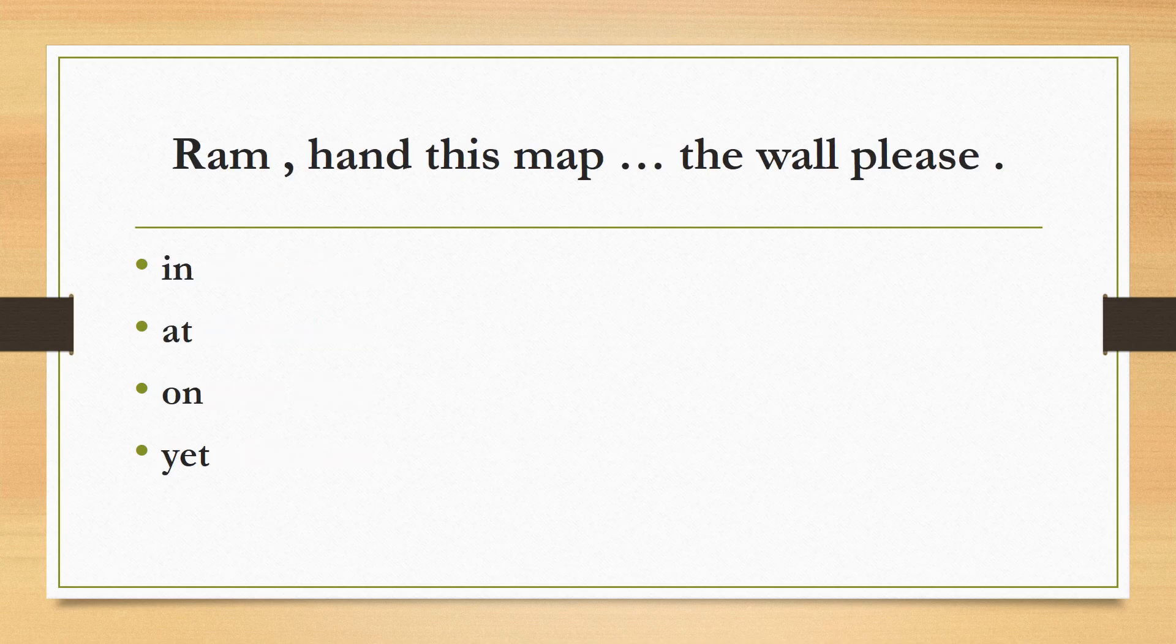Ram, hand this map the wall please, in, at, on, yet. The correct answer is 'on'. The preposition 'on' is used to denote surfaces or supported by, just like on the wall, write on paper, on food.